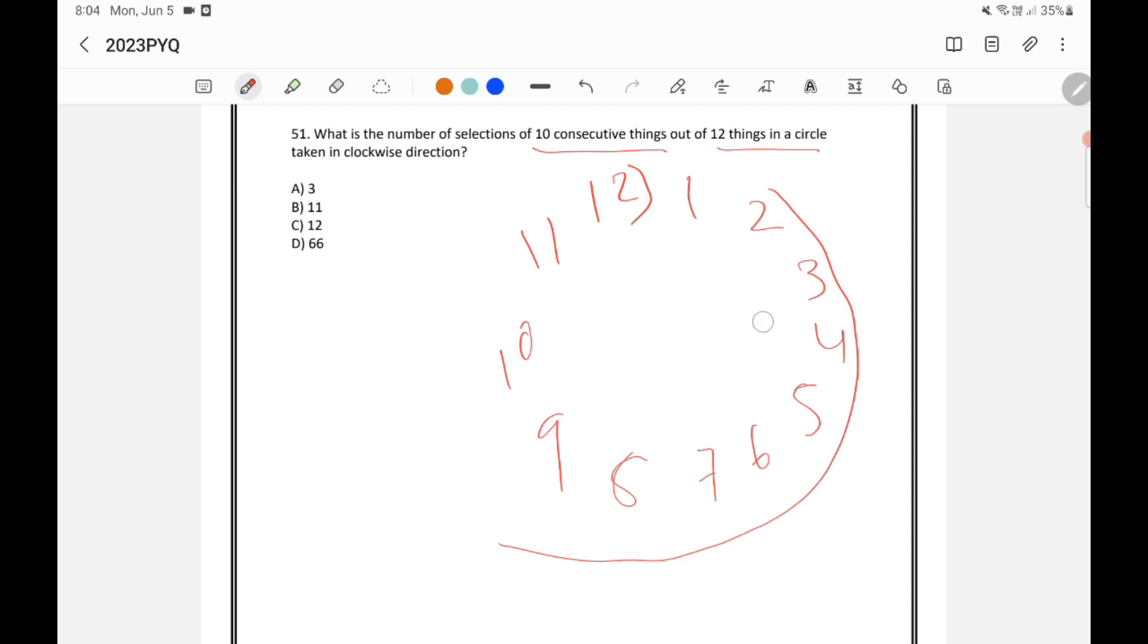So here if you check, so first one, I am starting from 1 to 10. I am removing 11 and 12. I will get one possibility. Now in the second case, if I remove 12 and 1, I will get another possibility.